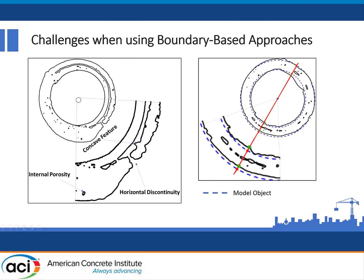There are other challenges. When measuring a boundary-based fidelity, the question is: where is the surface — where is that outermost boundary? There can be inner porosity that is not percolated to the surface, horizontal discontinuities that can pass completely through the surface, and concave features — like a large cavern inside the object — that you have to deal with. In a simple sense, what we do is identify the innermost surface and outermost surface of the printed object and compare those to the innermost and outermost surface of the model object to determine what we call boundary-based fidelity.